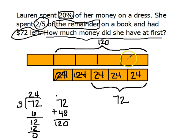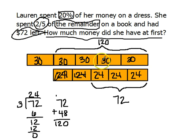The value of four of these blocks is $120. To find the value of each unit in the top bar, I take 120 and divide it by 4. 120 divided by 4 is $30, so the value of each unit is $30. Now I just count units: 30, 60, 90, 120, 150. So how much money did she have at first? She had $150 when she started.